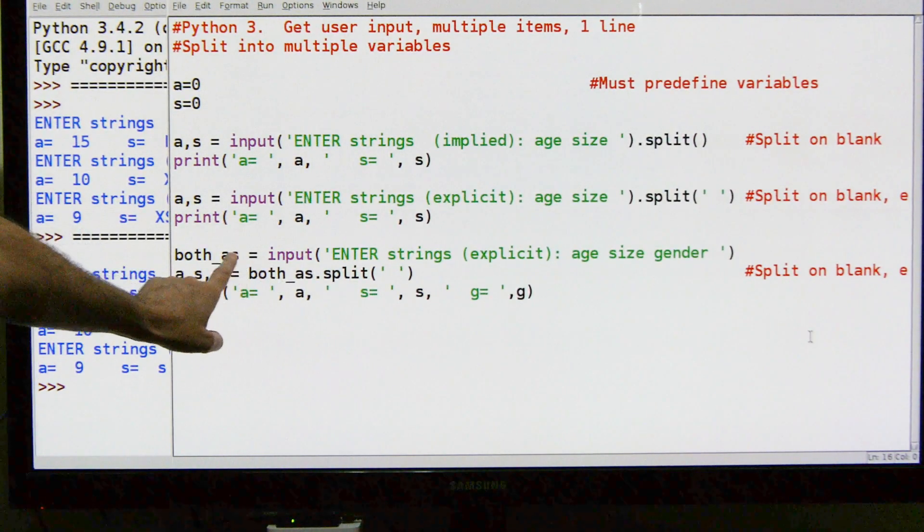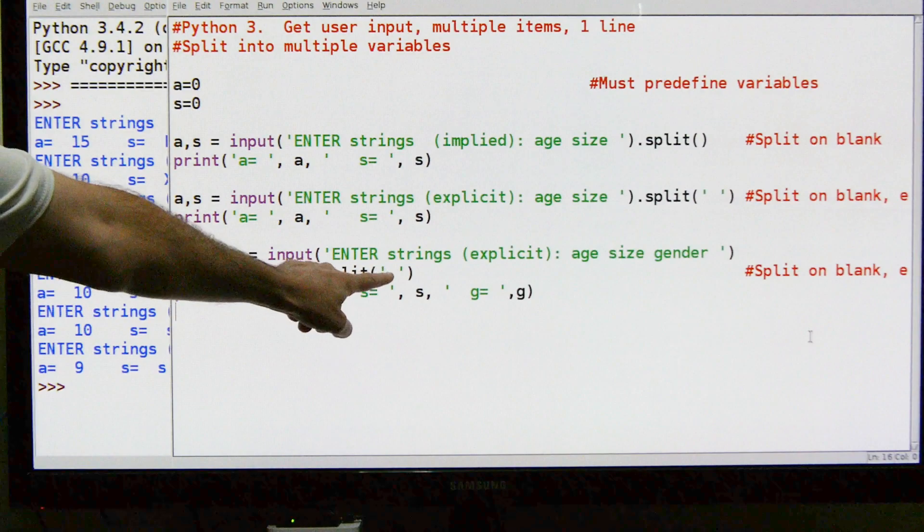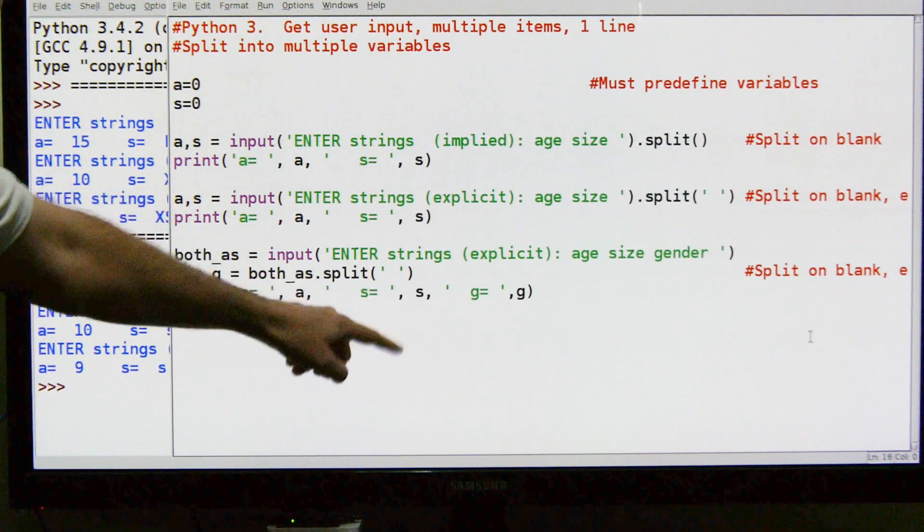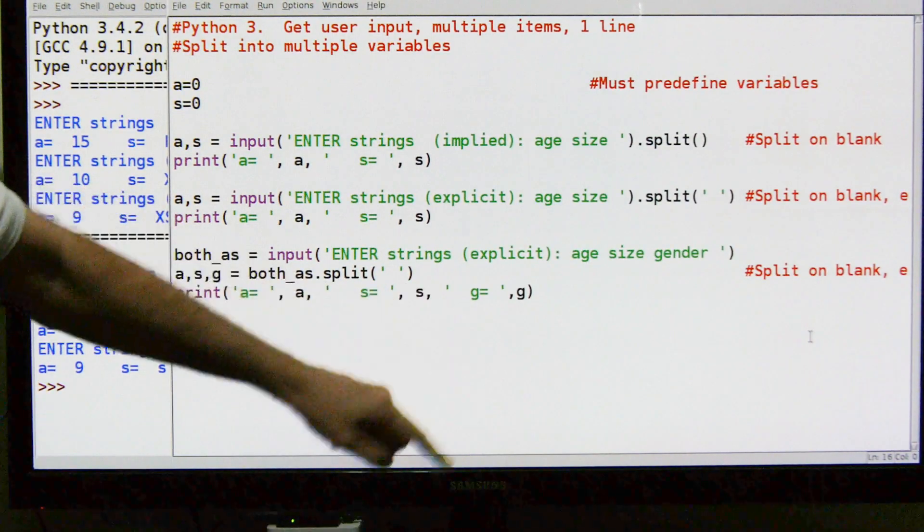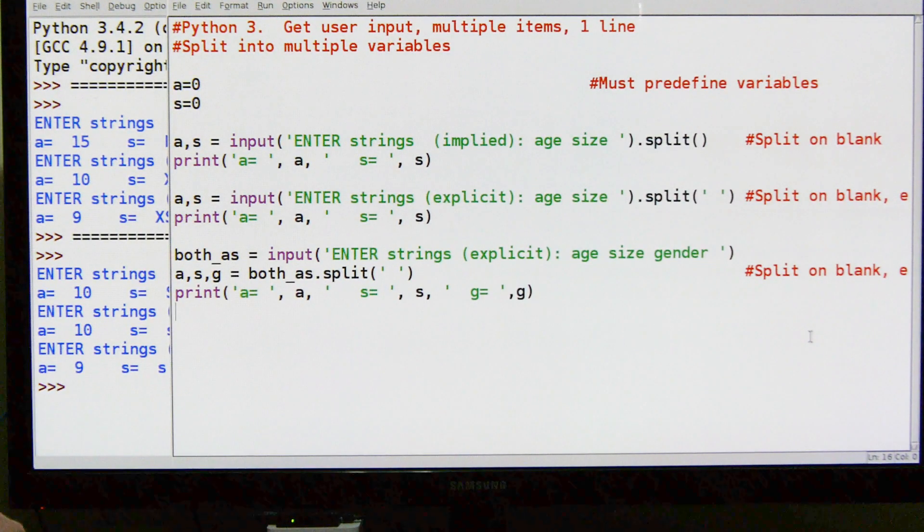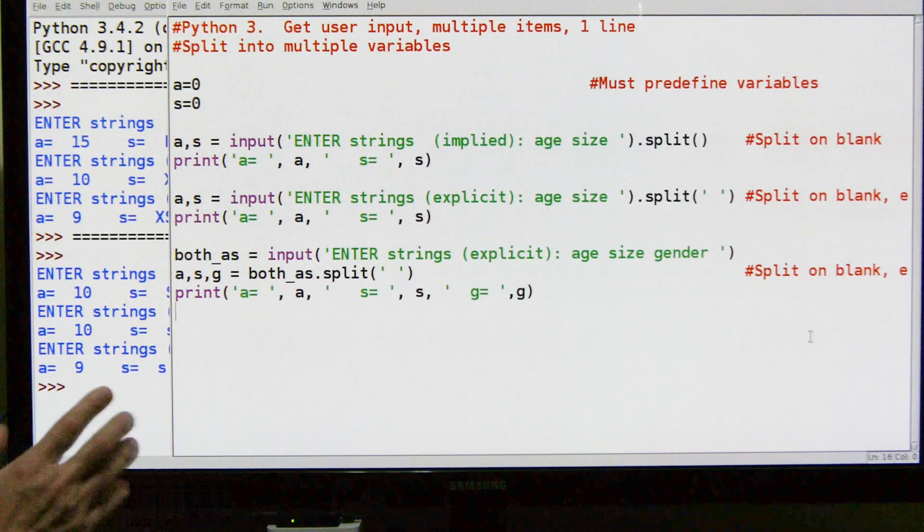We took this variable list and we split it based explicitly this time on spaces, and we stored those into these three variables and then printed those three variables. That's it - very simple, very convenient, much nicer.